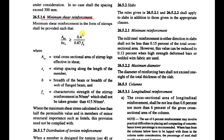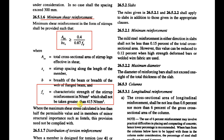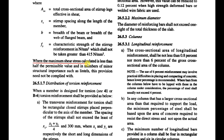For minimum shear reinforcement, stirrups shall be provided such that Asv/(b·Sv) ≥ 0.4 / (0.87·fy), where Asv is the total cross-sectional area of stirrup legs effective in shear, Sv is the stirrup spacing along the member length, b is the breadth of the beam or web of the flanged beam, and fy is the characteristic strength of stirrup reinforcement in N/mm², which shall not be taken greater than 415 N/mm².